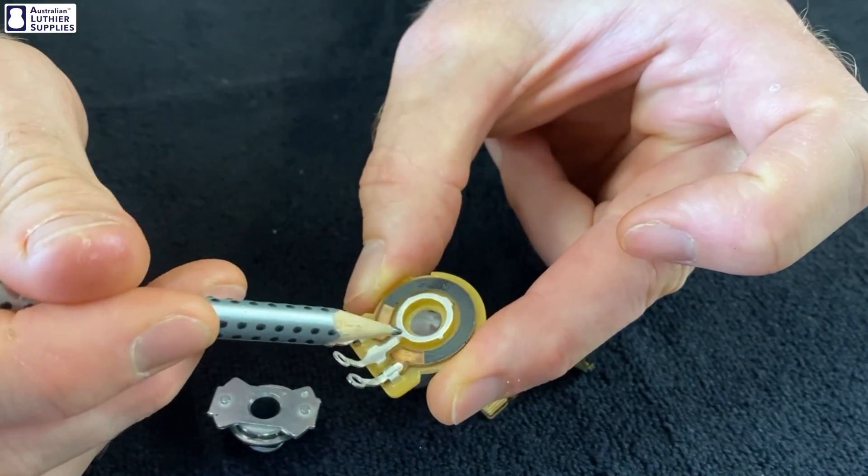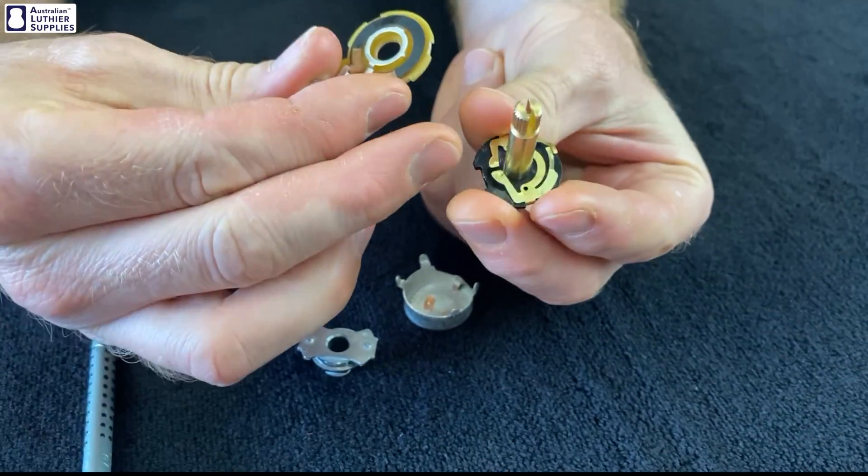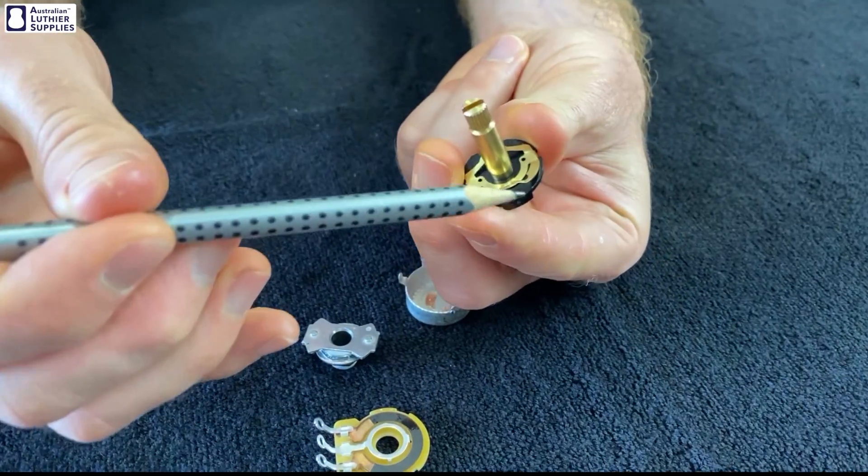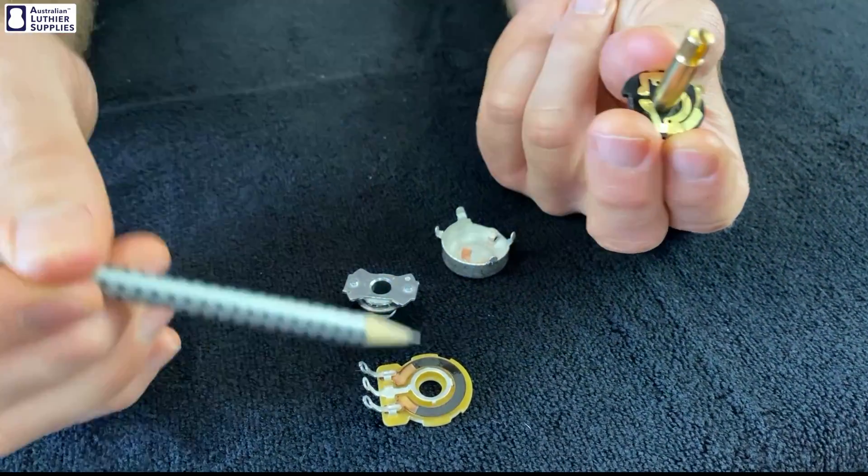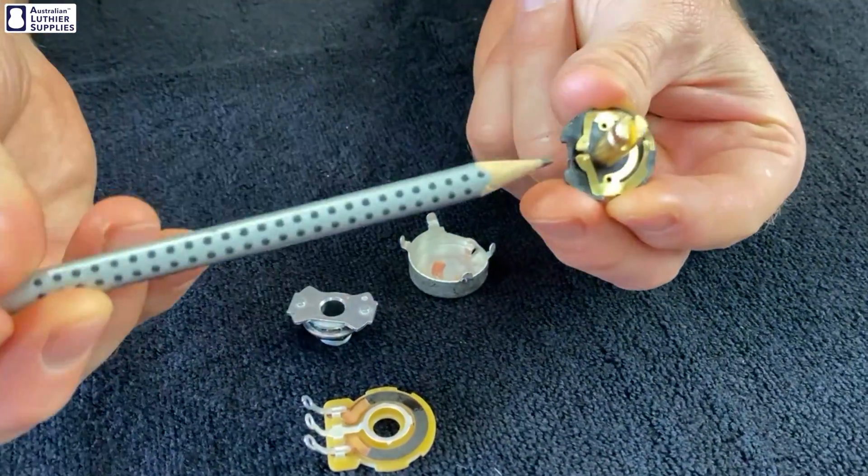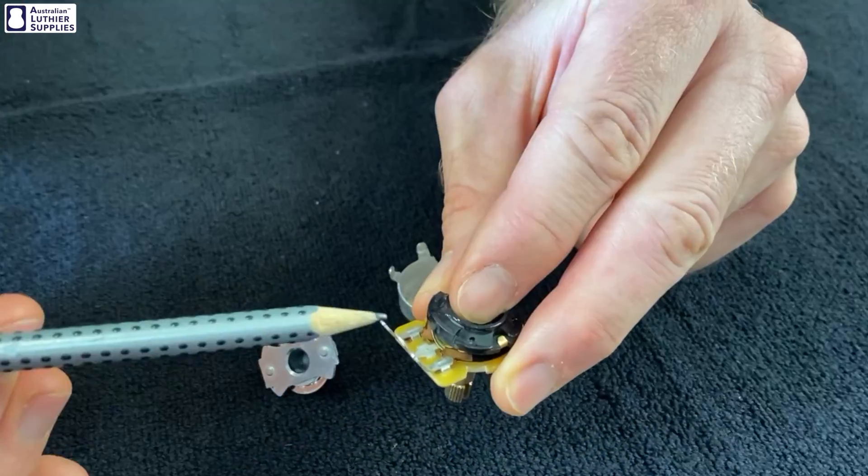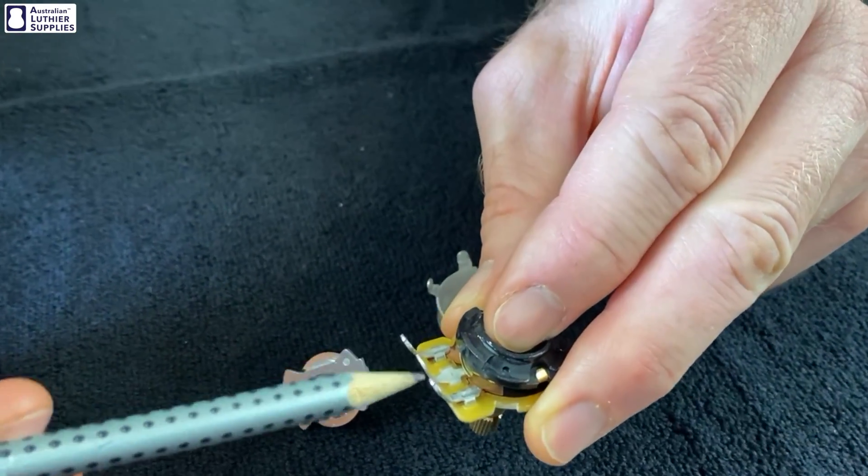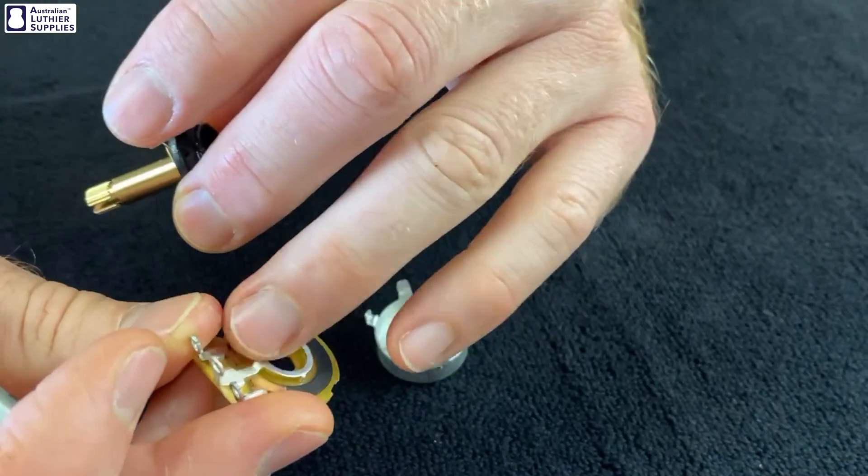The other part of the pot is the shaft and wiper apparatus. We call this the wiper here because it wipes along the carbon. There's also a second wiper here which goes around the metal. That second wiper is always in contact with the metal, so it is always in contact with the middle lug because that second wiper is actually always going around that metal ring there.